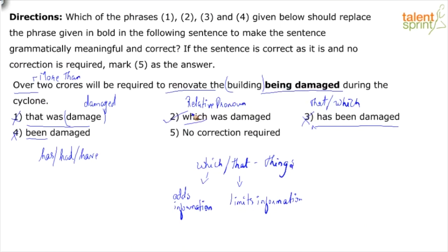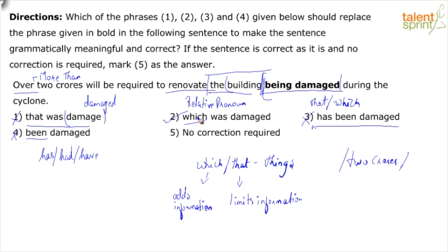Why not option one? Damage is not in the right form. Why not option three? The relative pronoun is missing. Option four can be ruled out because it doesn't have the appropriate helping verb — has, had, or have. Why can't we just leave 'being damaged' as it is? The reason is that 'being' is almost acting like a gerund here. I have to be specific about what is being damaged. I have to make a reference to this building, and the only thing that can connect to it is the relative pronoun. So there is a necessity for the relative pronoun to be added — I can't leave 'being damaged' as it is.